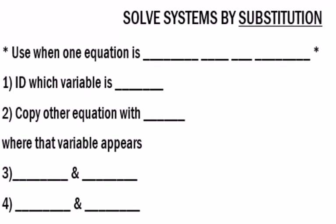So solving by graphing is great when they're both y equals because they're ready to begin with. Substitution is handy when at least one of the variables is by itself. So either x equals something or y equals something.